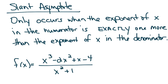There is another type of asymptote that we did not introduce to you last year, called the slant asymptote. Sometimes there is a line — it's linear — that cuts through the graph such that the graph does not cross it. A slant asymptote only occurs when the exponent of x in the numerator is exactly one more than the exponent of x in the denominator. In f of x, the largest exponent in the numerator is 3 and in the denominator is 2, so the numerator is exactly one more than the denominator.